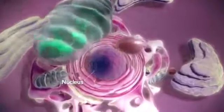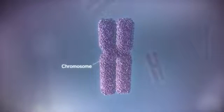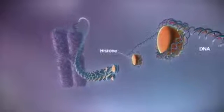The nucleus contains the genome. In humans, the genome is split between 23 pairs of chromosomes. Each chromosome contains a long strand of DNA, tightly packaged around proteins called histones.